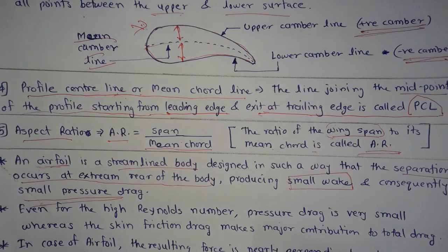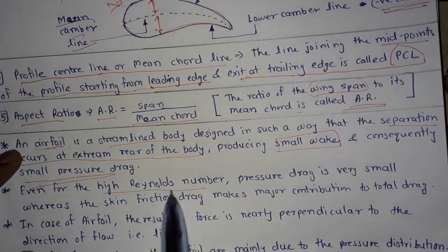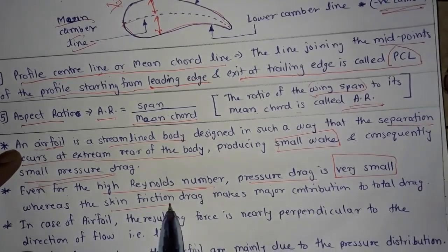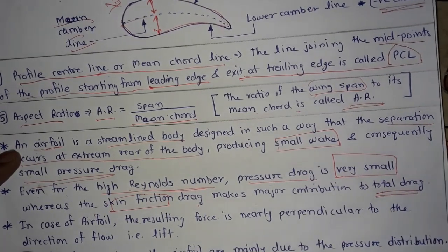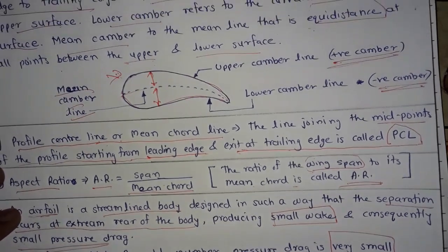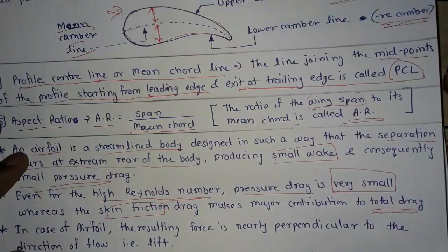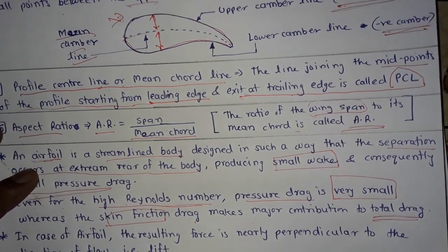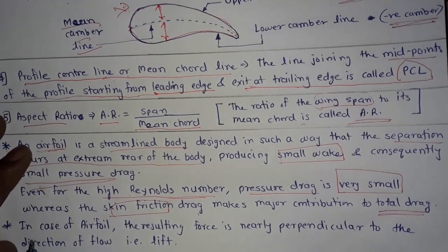Even for high Reynolds number, pressure drag is very small, whereas skin friction drag makes the major contribution to the total drag. Pressure drag on the airfoil is due to the pressure of the fluid or wind flow on the airfoil, and skin friction drag is due to the friction occurring on the airfoil due to the flow of the fluid or wind.